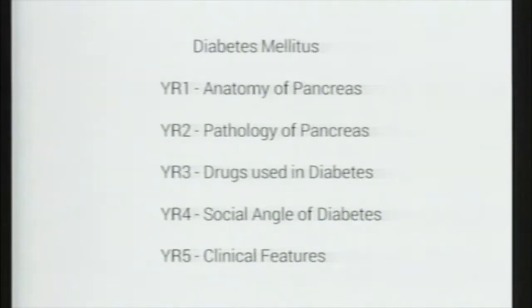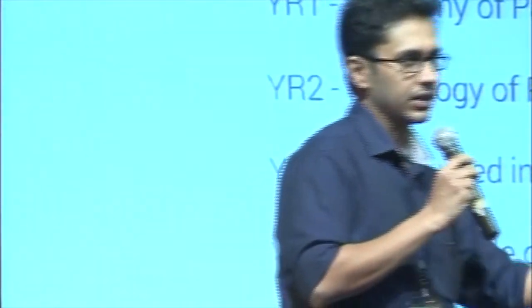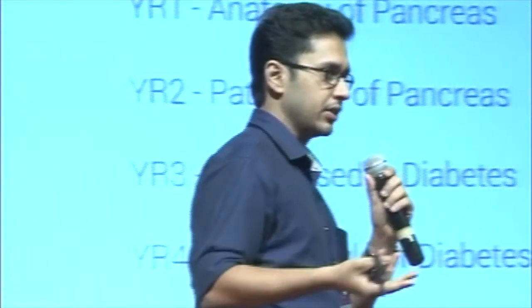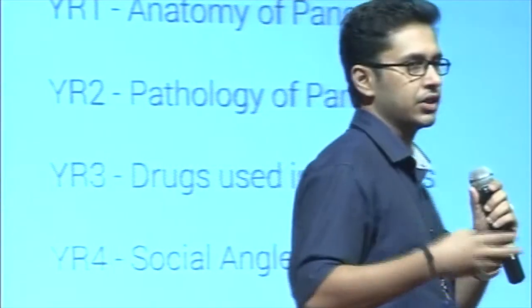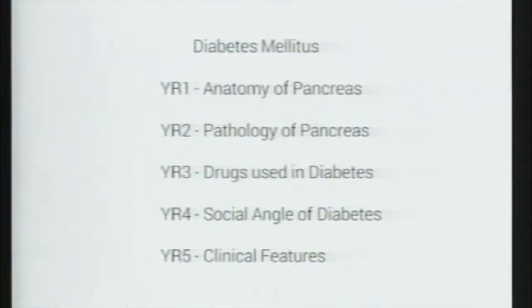I'll take one simple example: a very common disease called diabetes mellitus. In the first year we learned about the anatomy of the pancreas — we dissect out the body, take the pancreas out, and learn about the anatomy. In the second year you learn about the microstructure. In the third year, treatment. In the fourth year, the social angle and social burden. And the final year, the clinical features. So we are actually learning in a vertical model over five years.